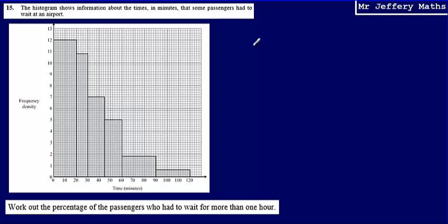This is question 15. Here we're told that the histogram shows information about the times in minutes that some passengers had to wait at an airport. We're asked to work out the percentage of the passengers who had to wait for more than one hour.